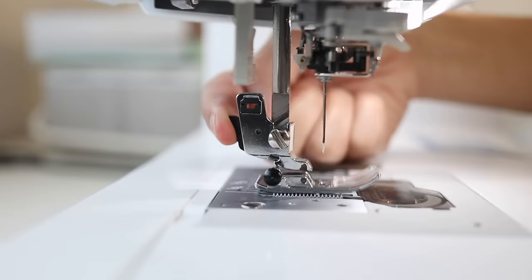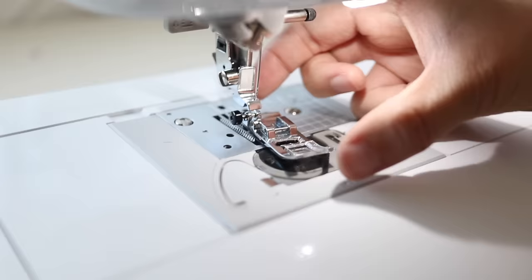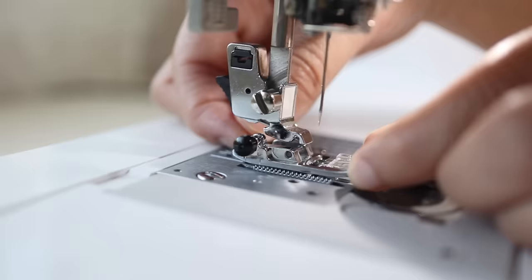To switch presser foots, all you have to do is reach your hand behind and there should be a little lever you press to release the foot. To add a presser foot back on slide the foot underneath and push the little bar that's in the middle up until it clicks in place.